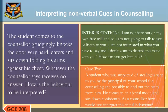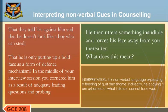Case 2: A student who was suspected of stealing is sent to the counselor by the principal for counseling, and possibly to find out the truth from him. He comes in a genial mood and sits down confidently. As a counselor, how would you interpret this initial behavior? One interpretation is that the charge lies against him and that he doesn't look like a boy who can steal. Another is that he is only putting on a bold face as a form of defense mechanism.